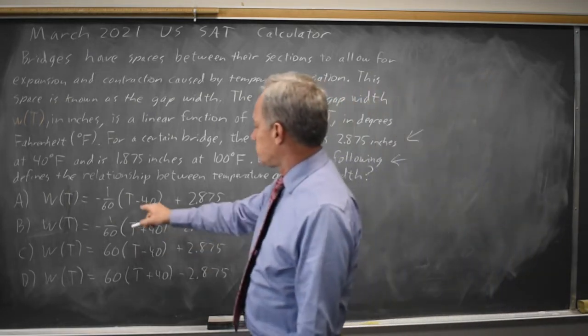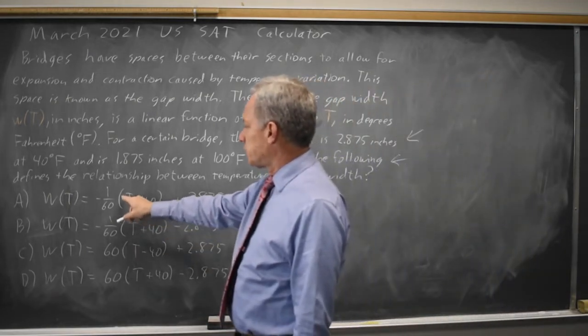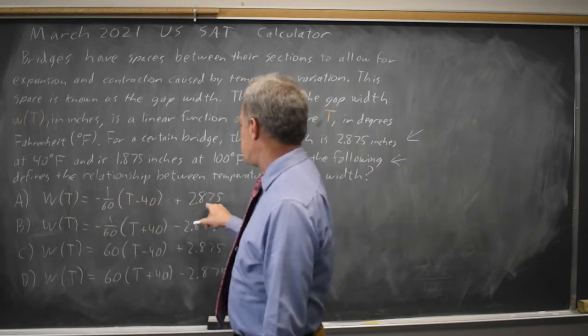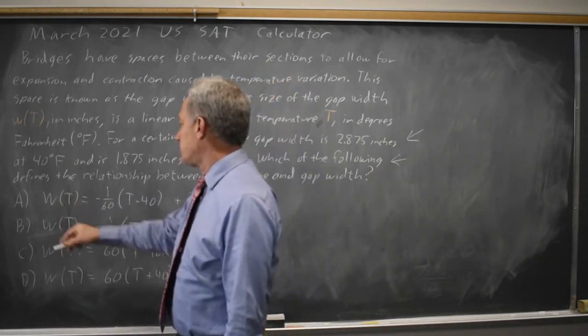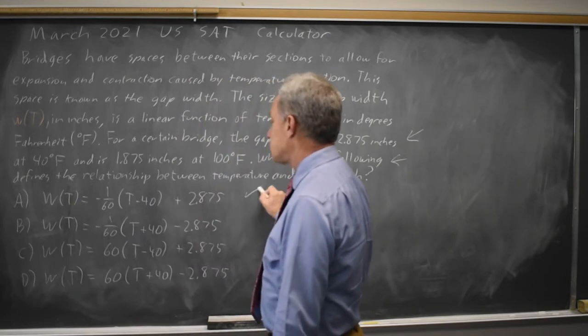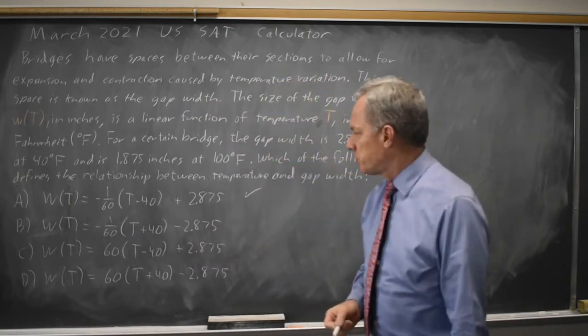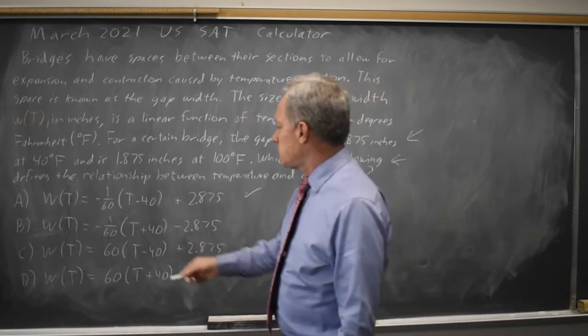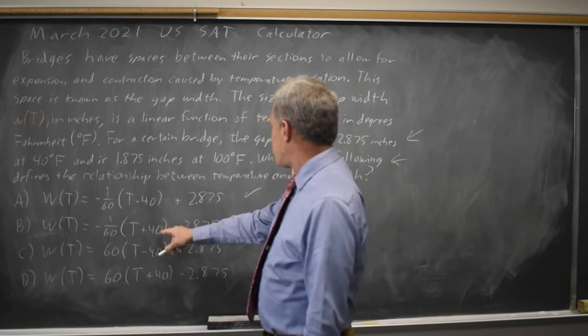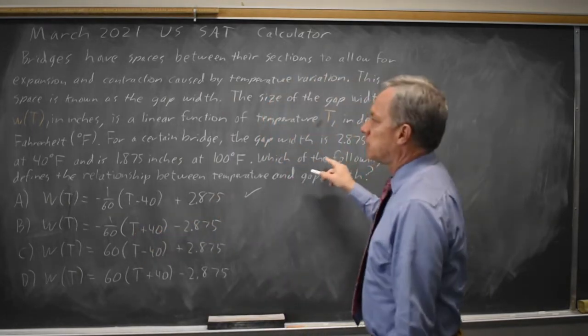So when T equals 40, this first one gives me 40 minus 40 is 0 plus 2.875, which is the correct width 2.875. So this could be correct, but there may also be other ones that work. This one gives me 40 plus 40 is 80 when T equals 40.